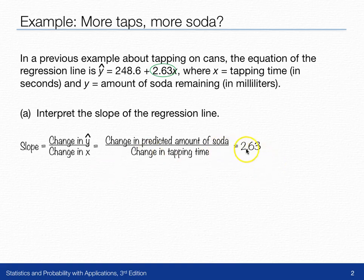Well, this 2.63 is equal to a fraction, so maybe it would be easier to write that as 2.63 over 1. So what can we say the 2.63 corresponds to? Well, the 2.63 corresponds to the top of this fraction. The change in predicted amount of soda is 2.63, and the 1 is the change in tapping time.